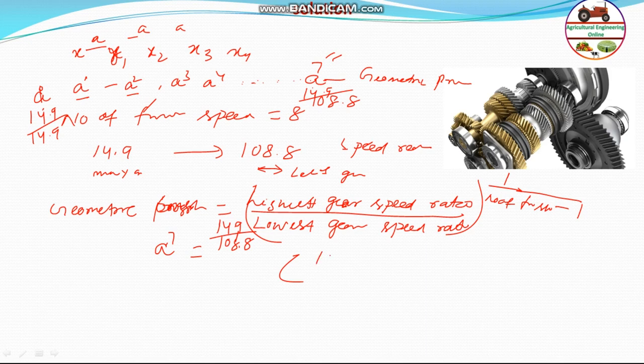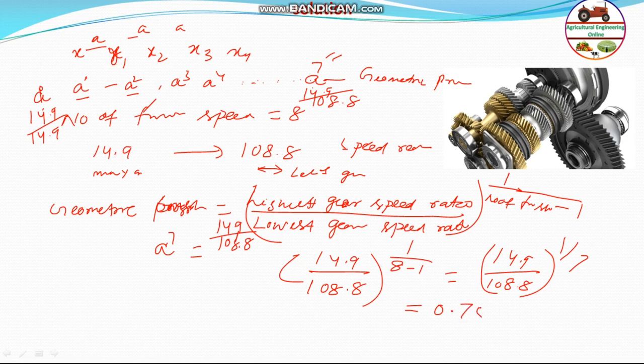In this case also this is happening, so therefore highest gear speed ratio will be equal to 14.9 and lowest is 108.8 to the power 1 divided by 8 minus 1. That will be equal to 14.9 divided by 108.8 to the power 1 by 7, so that will be equal to 0.753.